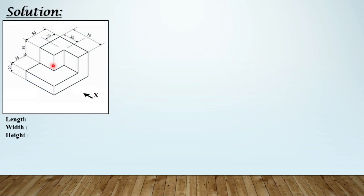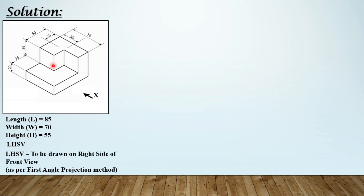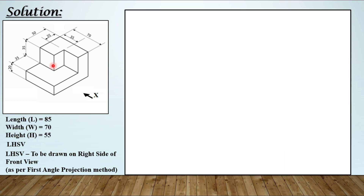Now starting with the actual solution, keeping this data with us. If nothing is mentioned in the question regarding which method of orthographic projection has to be used — that is, first angle or third angle method — then by default you have to choose the first angle projection method. According to first angle projection method, the front view is above, the top view is below it, and the left hand side view will be drawn on the right side of the front view.